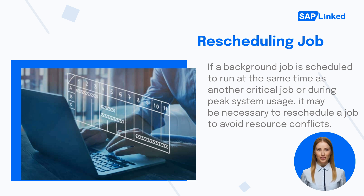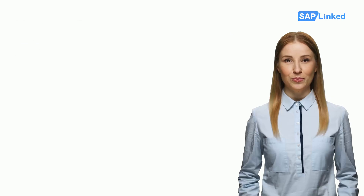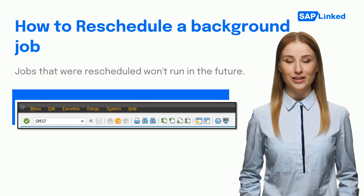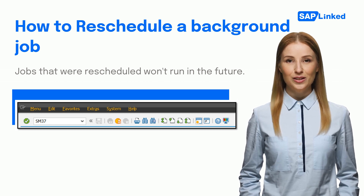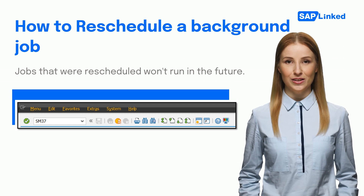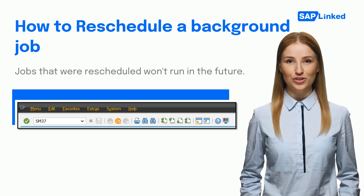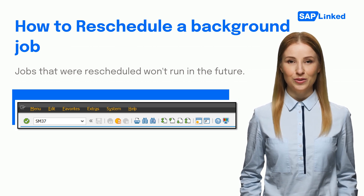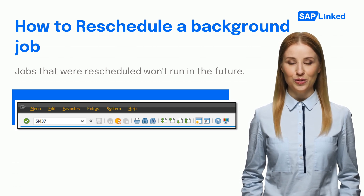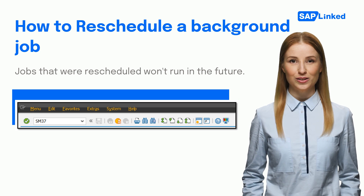To reschedule a job, we will follow some steps, which we will cover in upcoming slides. Once you have scheduled a job and it is in an active stage, you won't be able to reschedule it. To reschedule a job, type in transaction code SM37 in the command field as shown in the image here and click on the Execute button. There are a set of requirements to be met while scheduling a job, which we will cover in the next slide.